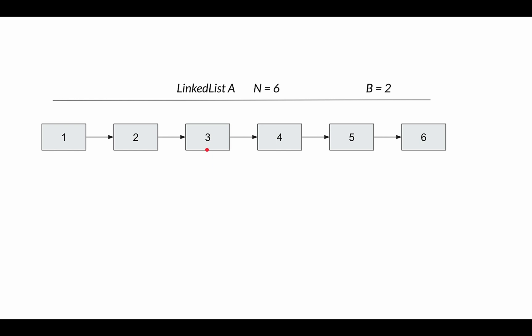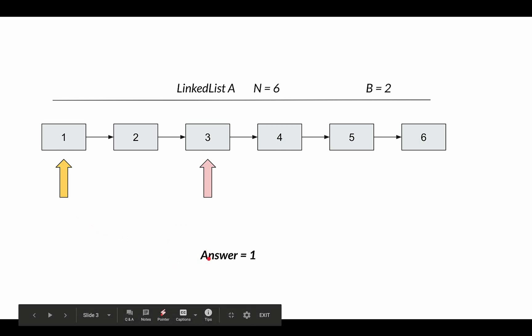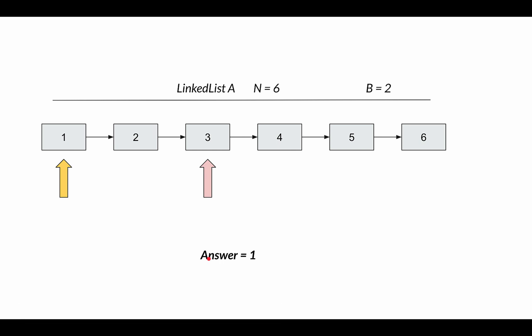If the center is node 3, you have to find the second node from the center towards the beginning. That would be node 1 — moving one, two steps back. So you return 1. The center is 3, you move towards the beginning, and the answer comes out as 1.